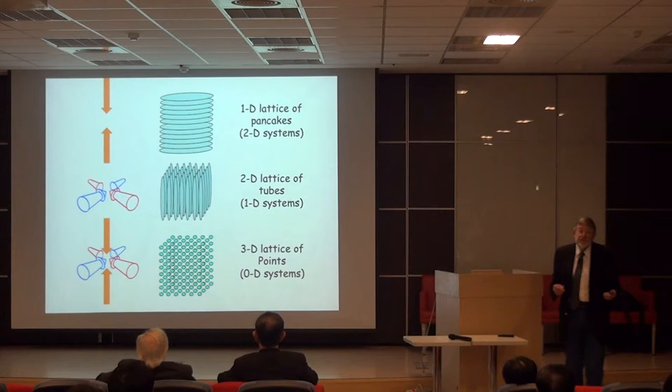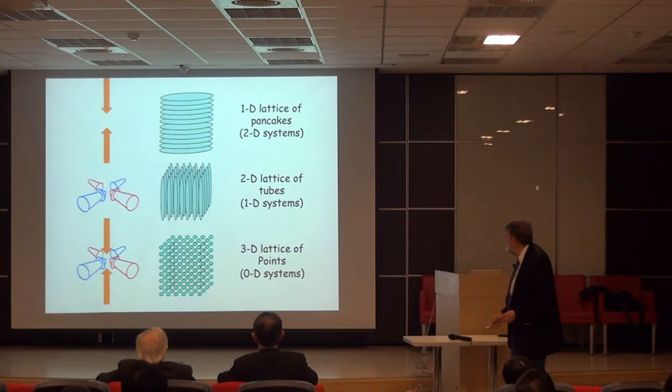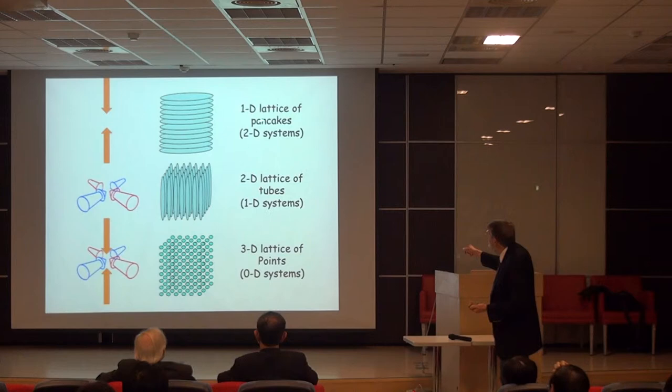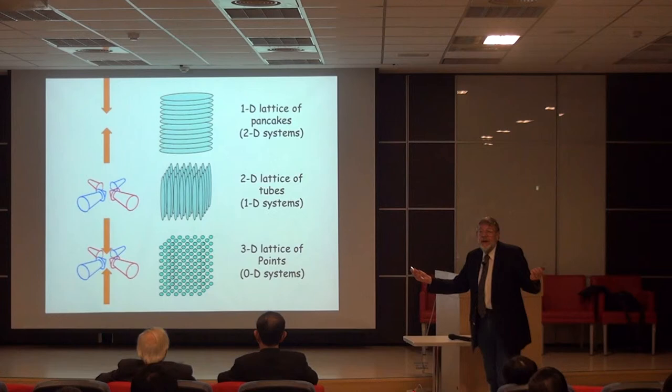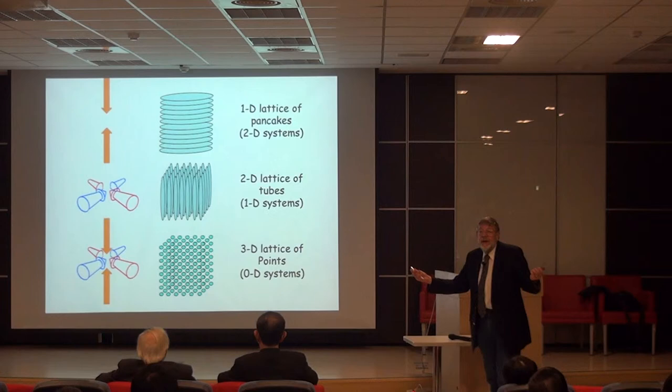Examples of different dimensionality crystals: two counterpropagating laser beams make a 1D lattice — a stack of pancakes, or two-dimensional systems arrayed in 1D. Four laser beams in a plane make a 2D lattice of one-dimensional systems. Combining both gives an ordinary 3D crystalline lattice — a lattice of zero-dimensional points.